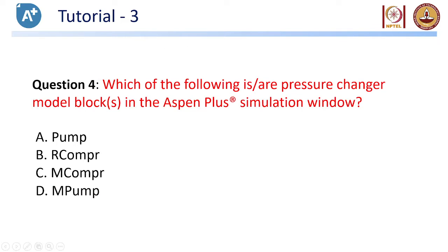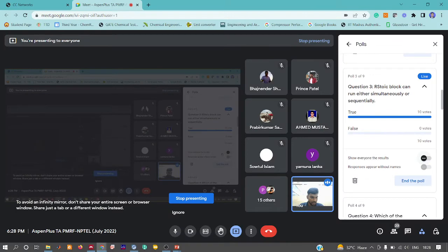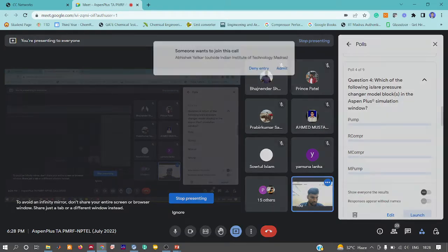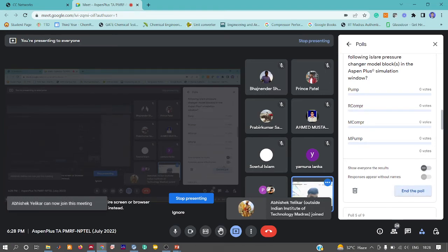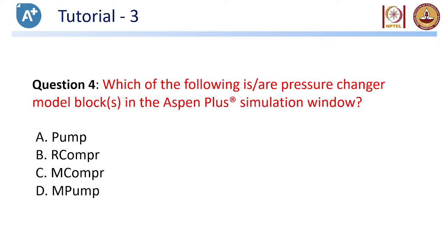One more question regarding pressure changes: 'Which among these is a pressure changer block available in Aspen?' The poll is on, please respond. You can actually open Aspen if you have it in front of you - it need not come from memory. It's hard to remember everything available in Aspen, so if you have it open just check the model palette.